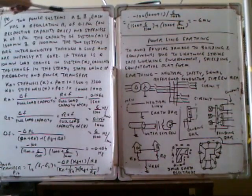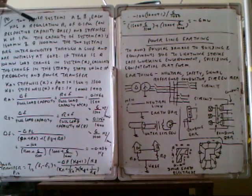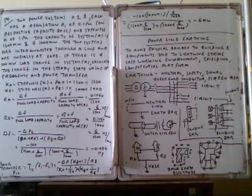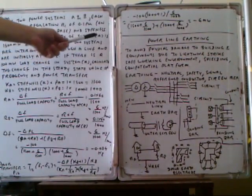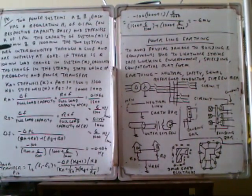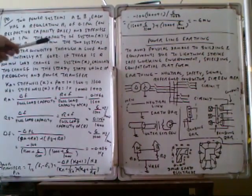In this program, the two power systems are A and B. Each has a regulation hour of 0.05 per unit, or a respective capacity base, and a stiffness of 1% per unit. The capacity of system A is 1500 MW, and system B is 1000 MW.